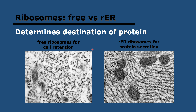Ribosomes carry out protein synthesis through translation. Ribosomes can be free in the cytoplasm — called free ribosomes, you can see them all over the place. The proteins synthesized by free ribosomes are released into the cytoplasm and normally either remain in the cytoplasm or go to the nucleus — they are retained in the cell. But ribosomes can also be attached to the rough ER. Proteins made by rough ER ribosomes are transported in vesicles and are normally secreted from the cell — for example, antibodies. Where the ribosome is determines the destination of the protein.